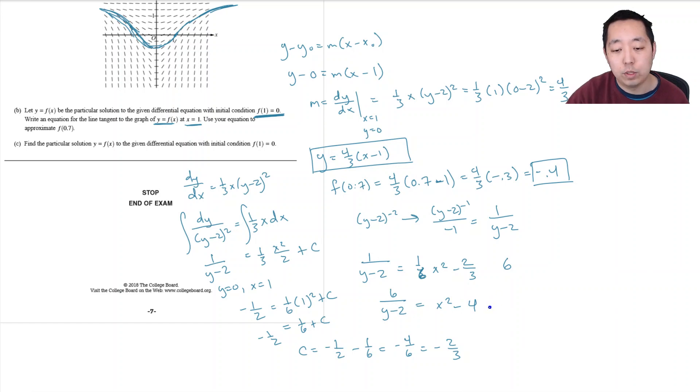And then I can cross multiply. Bring the y minus two up. So it's negative six over x squared plus two is equal to y minus two. Or y is equal to two minus six over x squared plus two.